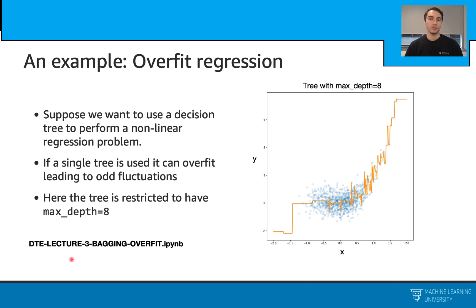We will first create a random dataset. In this plot, you will see these blue dots that are coming from a random dataset. Then we will first fit a simple decision tree on this, then we will apply a bagging method, and we will compare those.